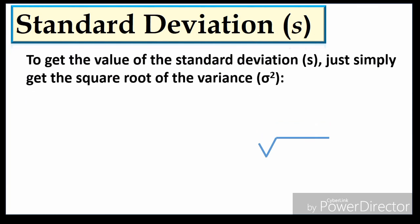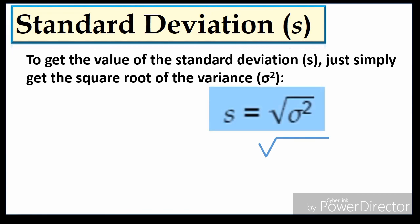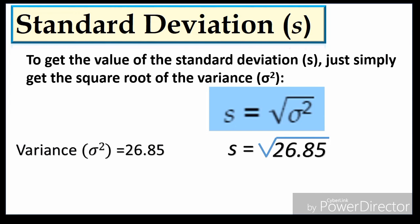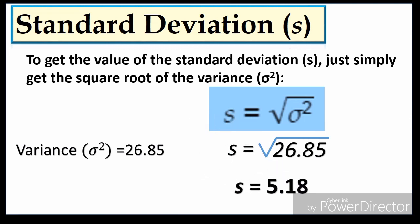The next measure is the standard deviation. To get the standard deviation s, simply take the square root of the variance. So s = √26.85 = 5.18.